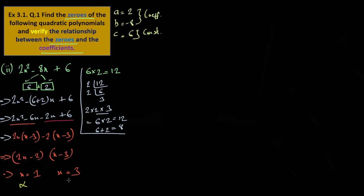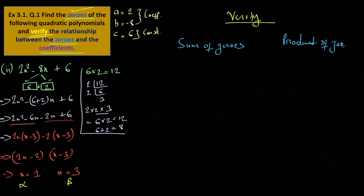Alpha is one zero and beta is the other zero. Let's verify. We need to find the sum of zeros and the product of zeros. Sum of zeros: alpha plus beta. Alpha is x=1, beta is x=3.